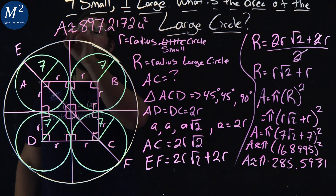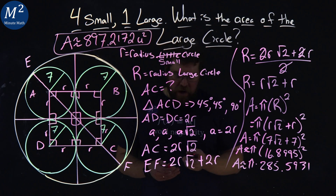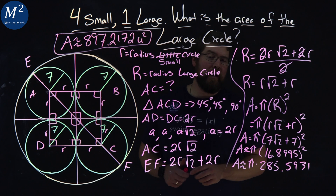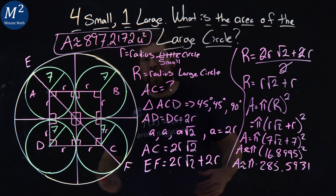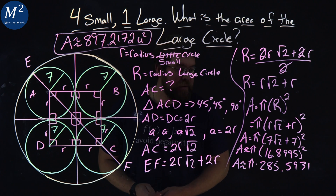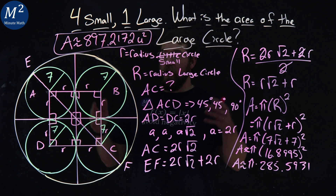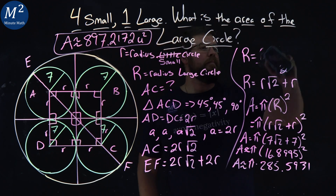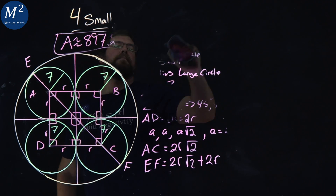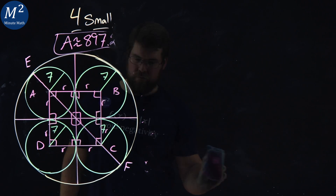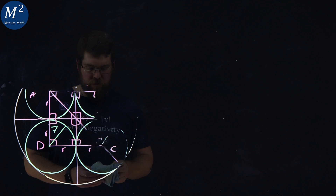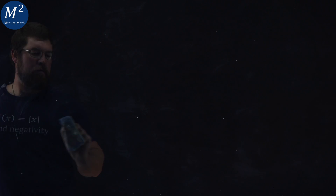Don't forget it's units squared, everybody, because we're dealing with area here. We got 897.2172 units squared for the area of the large circle — approximately 897 units squared. Is that what you got? If so, great. If not, I hope you learned something here, and that's really the point of this video. Thanks for watching.